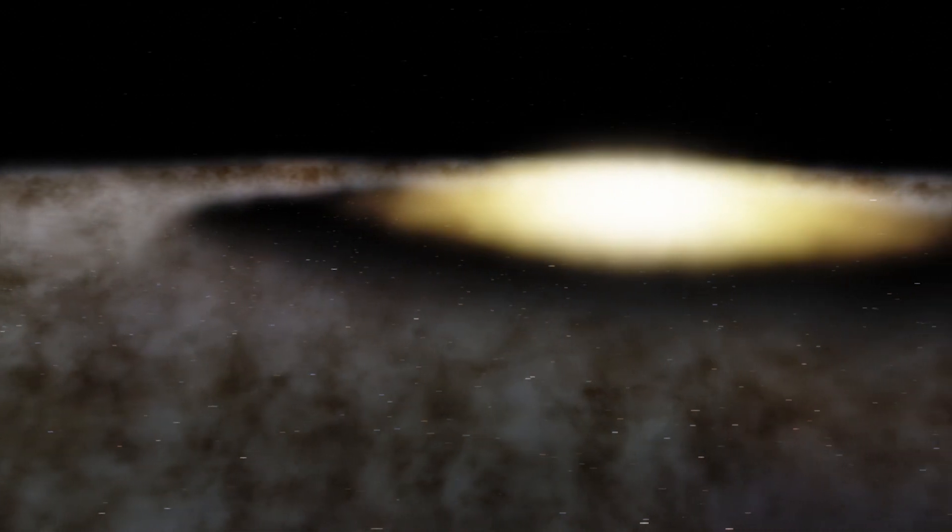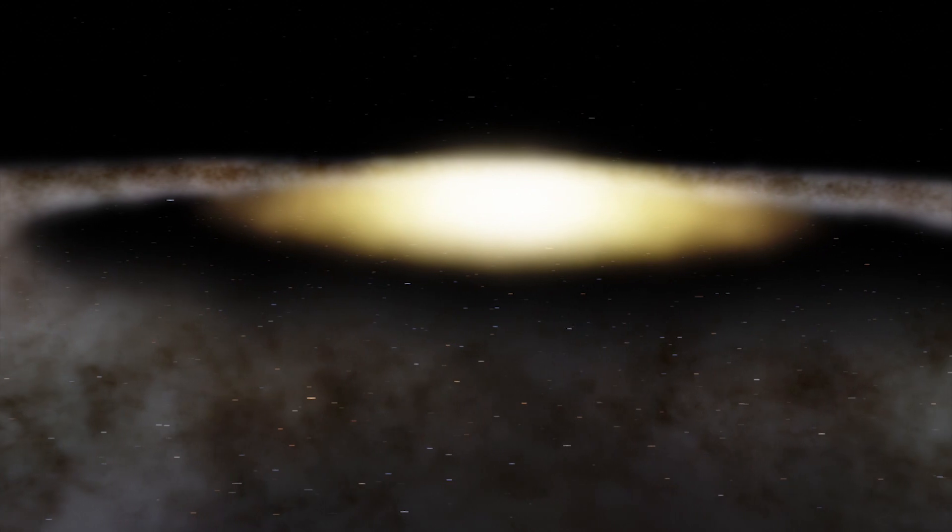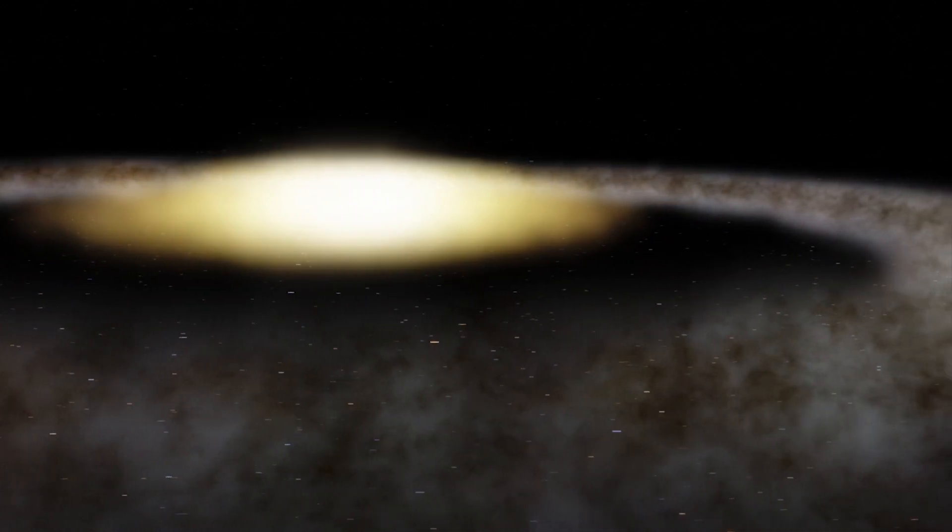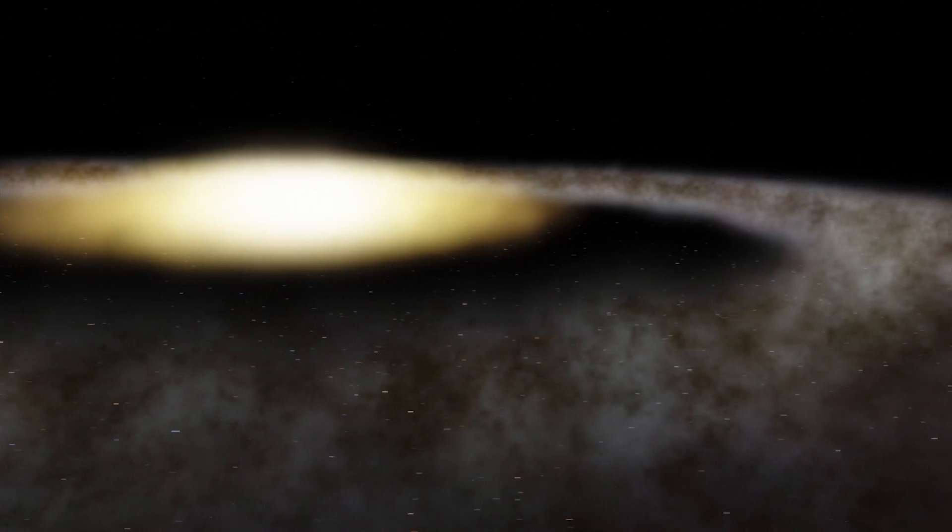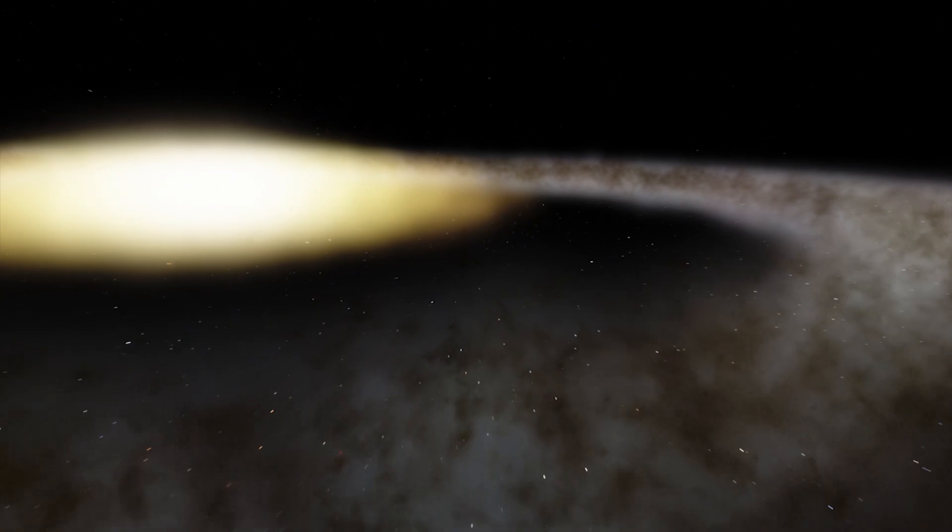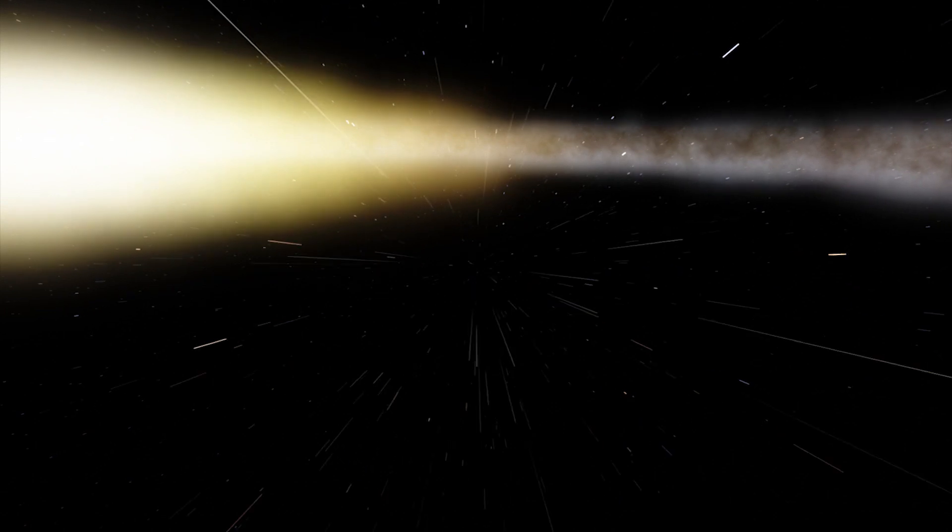On the outside is a ring dominated by bright blue stars, while near the center lies a ball of much redder stars that are likely much older. Between the two is a gap that appears almost completely dark.